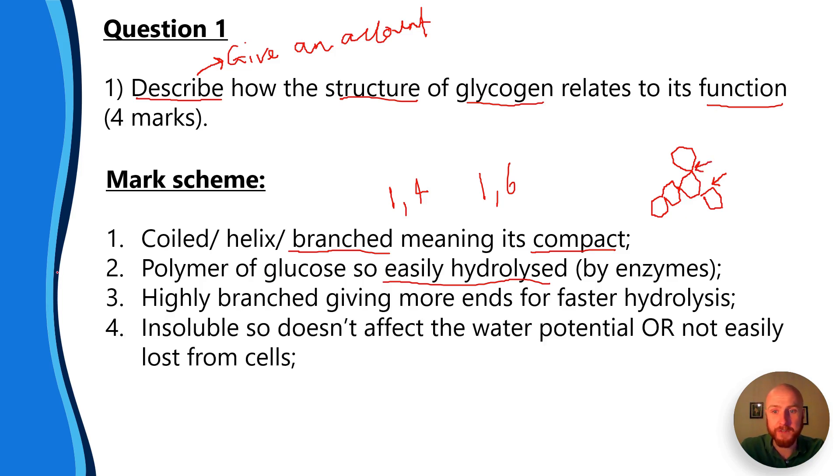The next mark is for saying that glycogen is insoluble. That means it doesn't dissolve in water, so it won't affect the water potential. Another way to get mark point four is to say that it's not easily lost from cells because it's insoluble.